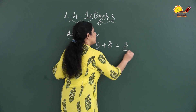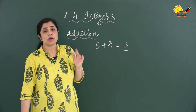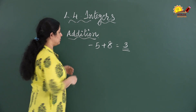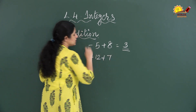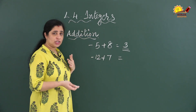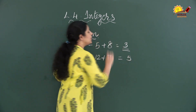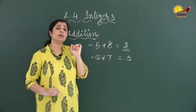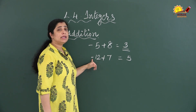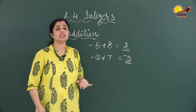Here the bigger number is 8, which is positive, so the answer is also positive. Therefore minus 5 plus 8 equals plus 3. Let's take another example: minus 12 plus 7. One is negative and the other is positive, so do the subtraction: 12 minus 7 equals 5. The sign should be the sign of the bigger number, which is 12, and its sign is negative. So the answer is minus 5.